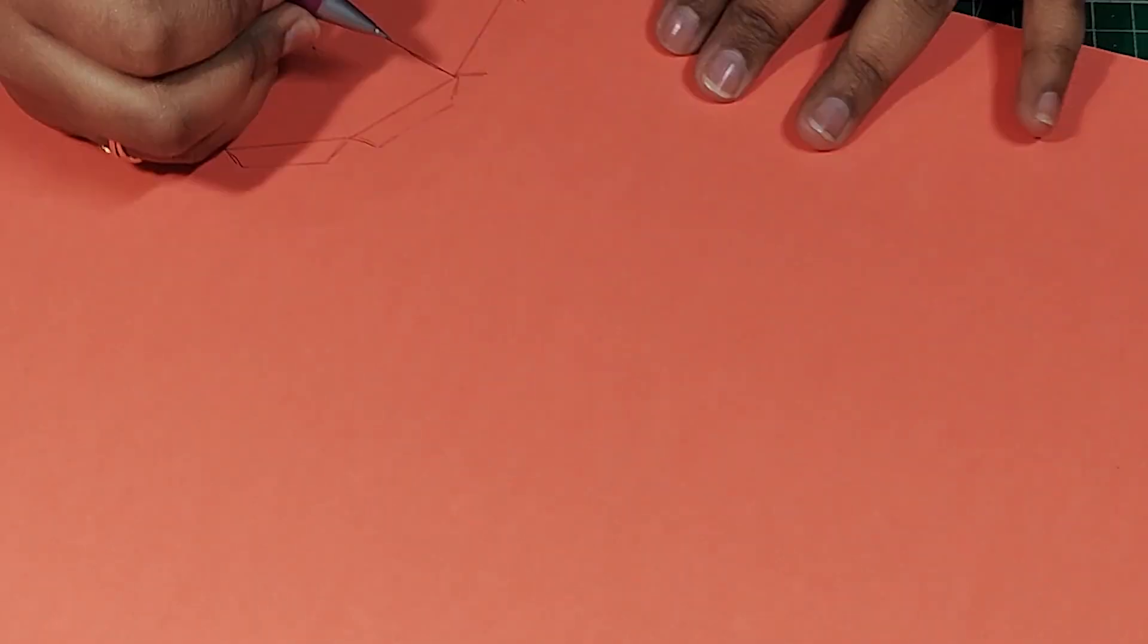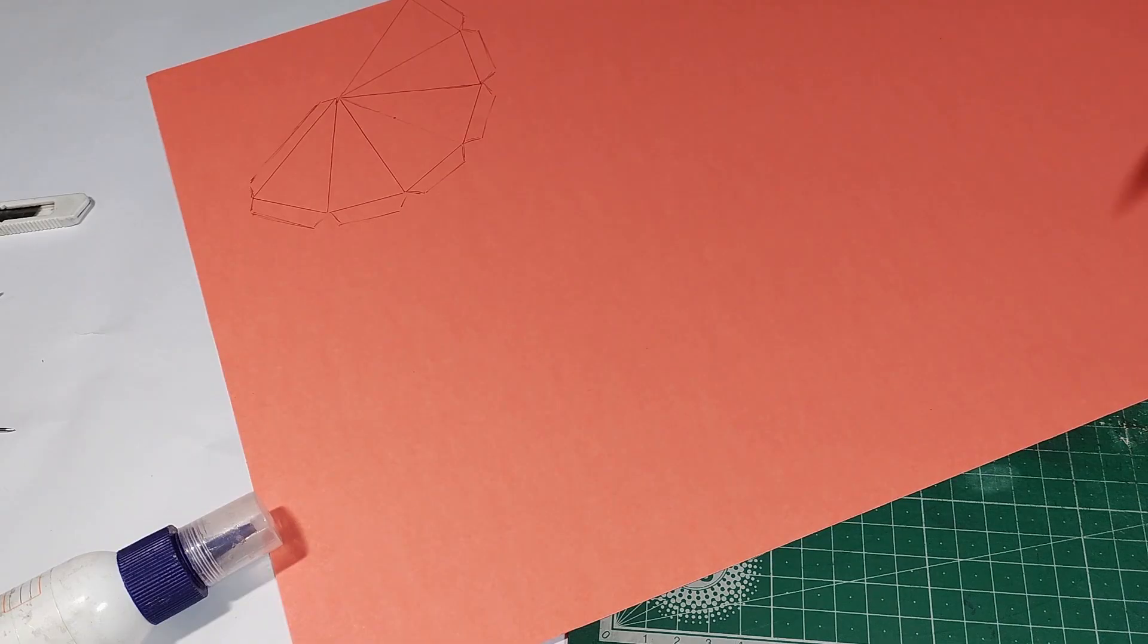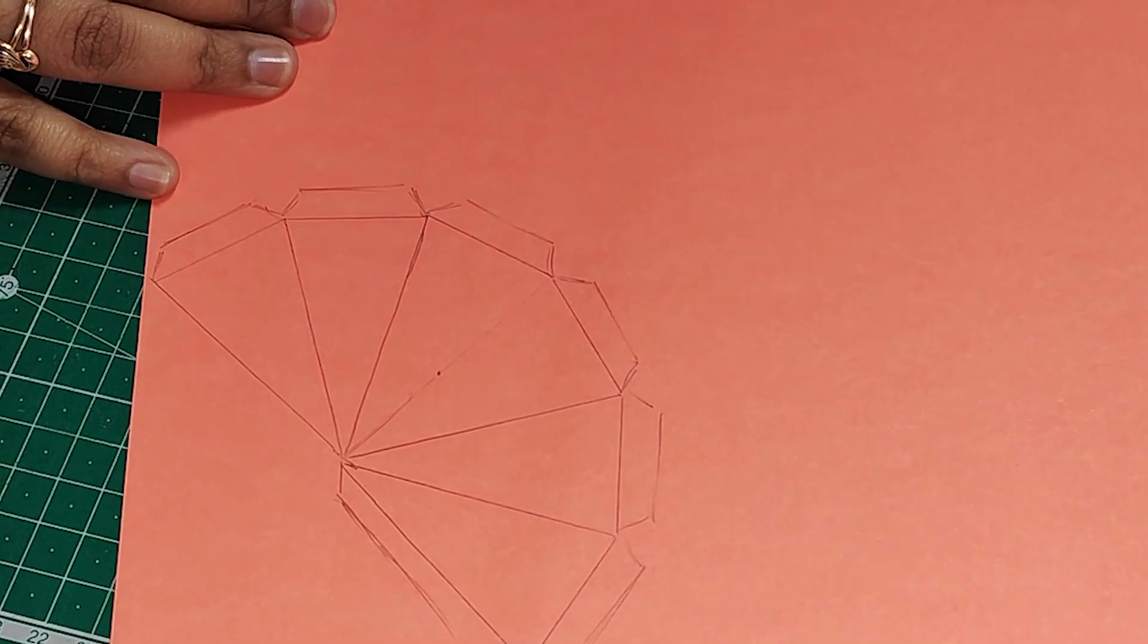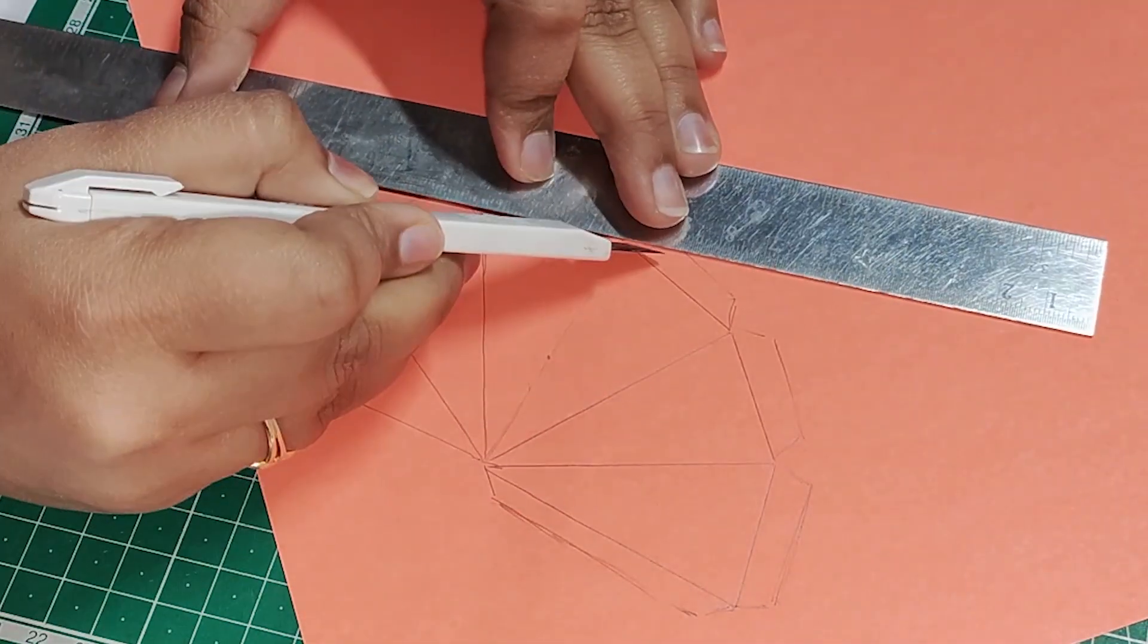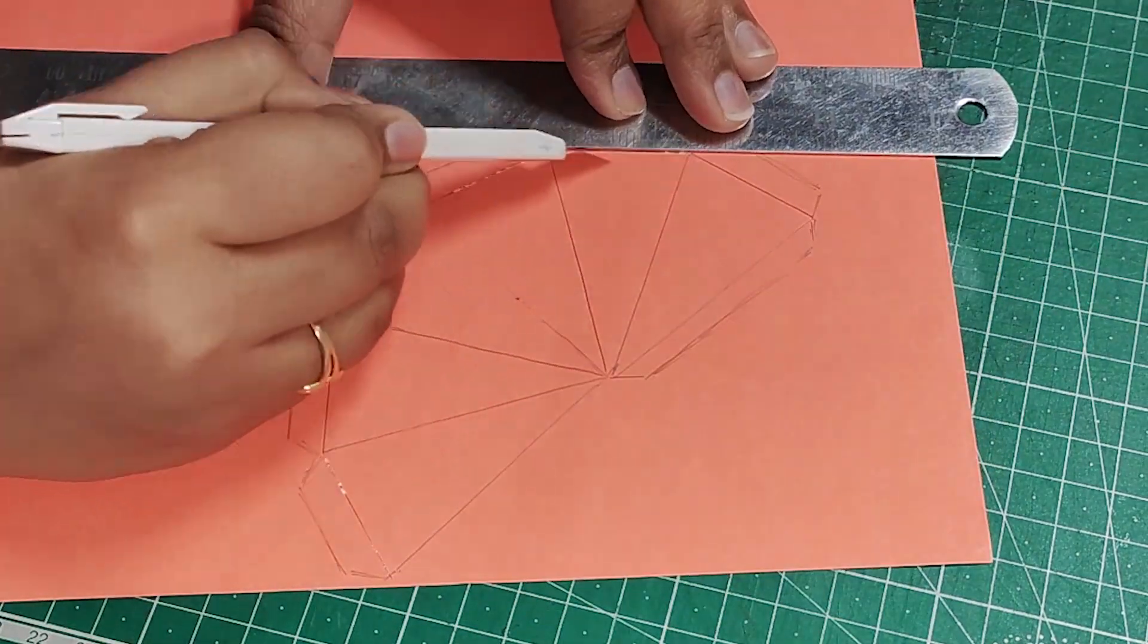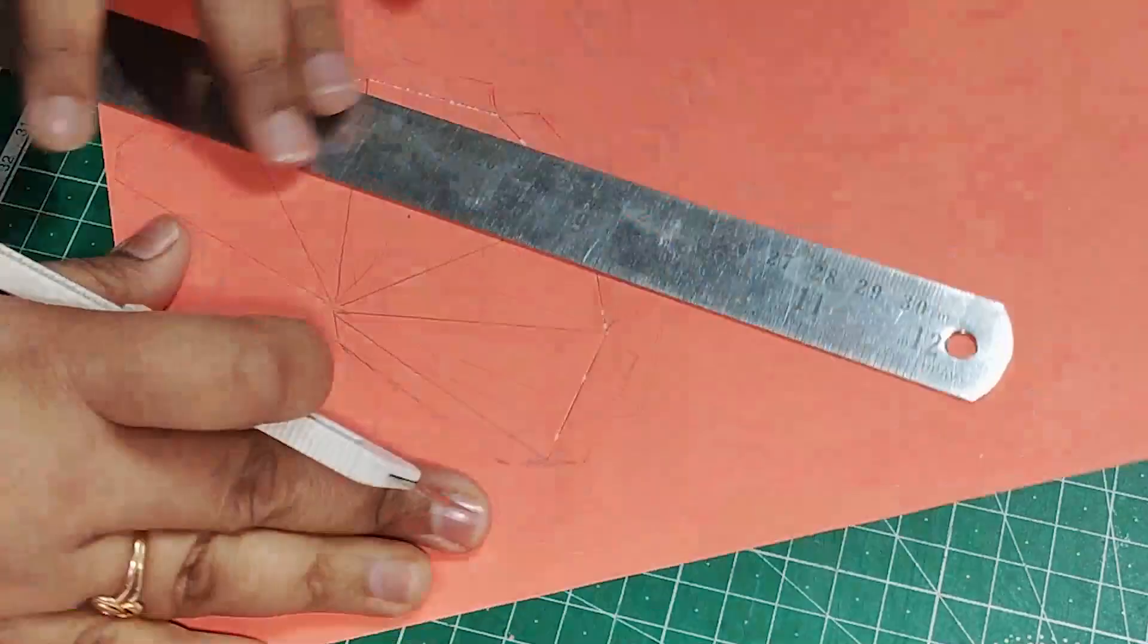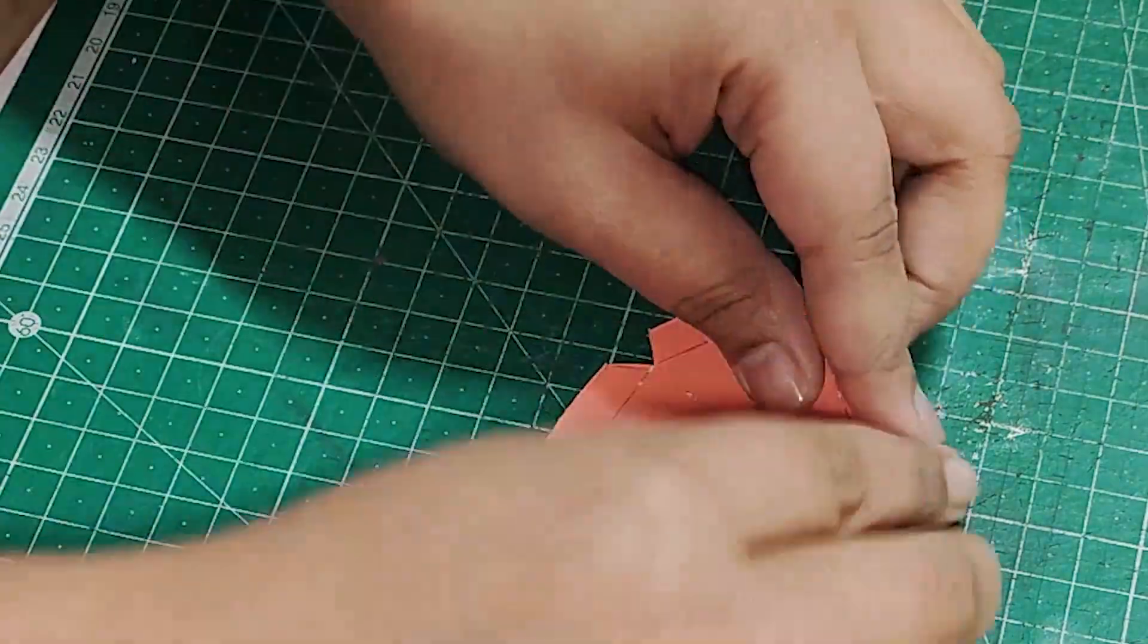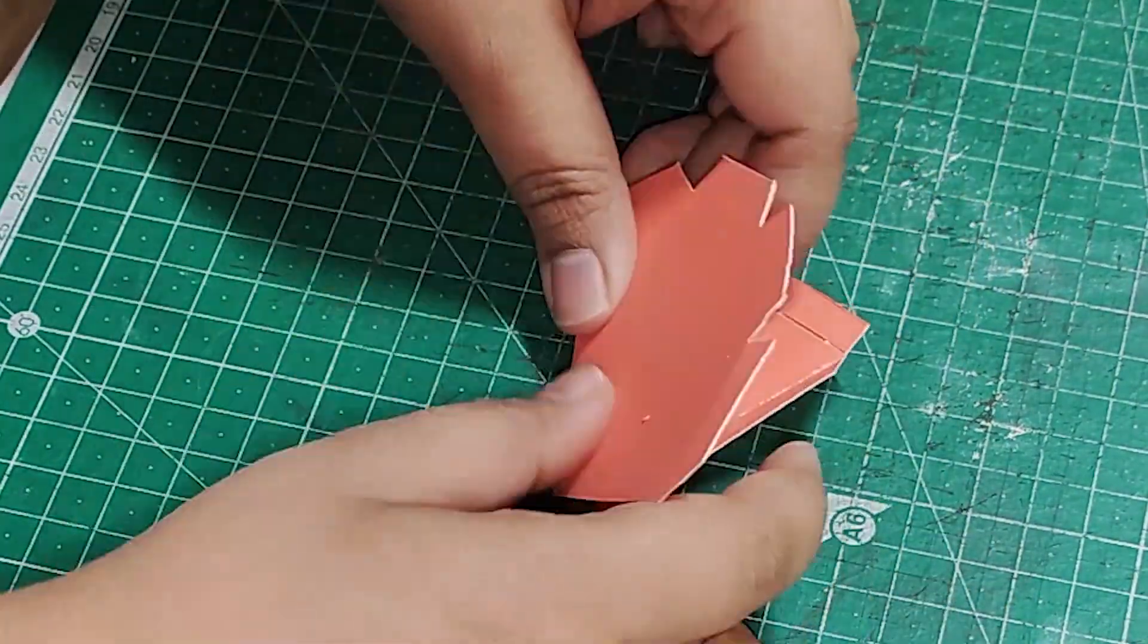Don't forget to half-cut all the folding edges, otherwise your folding edges won't be very sharp. After the template is made, now we will paste it onto the pencil body.